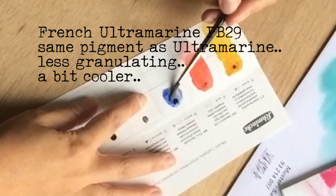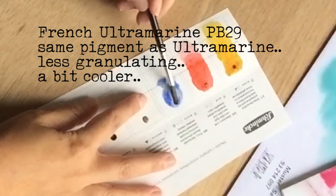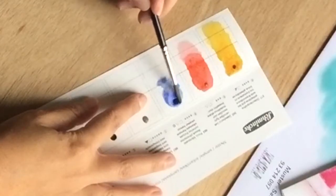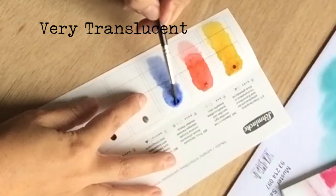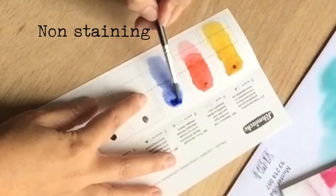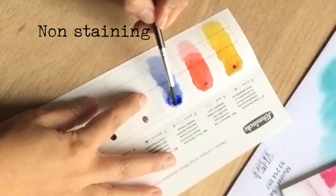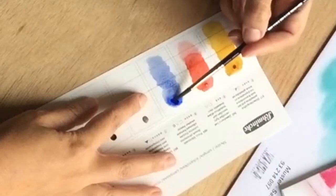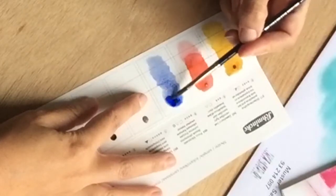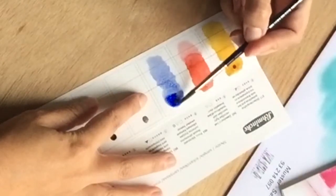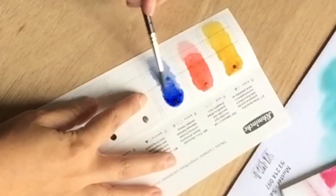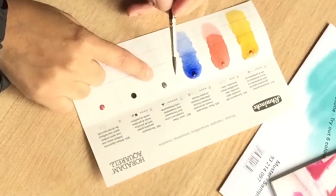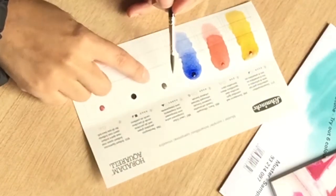This is French Ultramarine. Next, we have the Transparent Ochre.